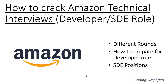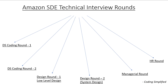First we'll focus on which different rounds happen in the Amazon SDE role, and then how we can prepare for that. In Amazon overall, there are generally two kinds of positions: SDE (Software Development Engineer) and SDET (Software Development Engineer in Test). SDET is for testing and SDE is for the developer role.